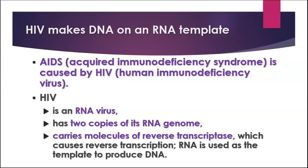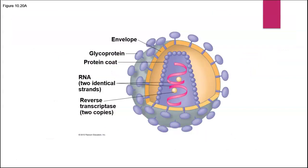HIV causes the disease AIDS — Acquired Immunodeficiency Syndrome. It's caused by HIV, the Human Immunodeficiency Virus. It's an RNA virus, and specifically a retrovirus. It has two copies of its RNA genome and carries molecules of reverse transcriptase, which basically takes the RNA and uses it as a template to produce DNA, then takes over in the cell.